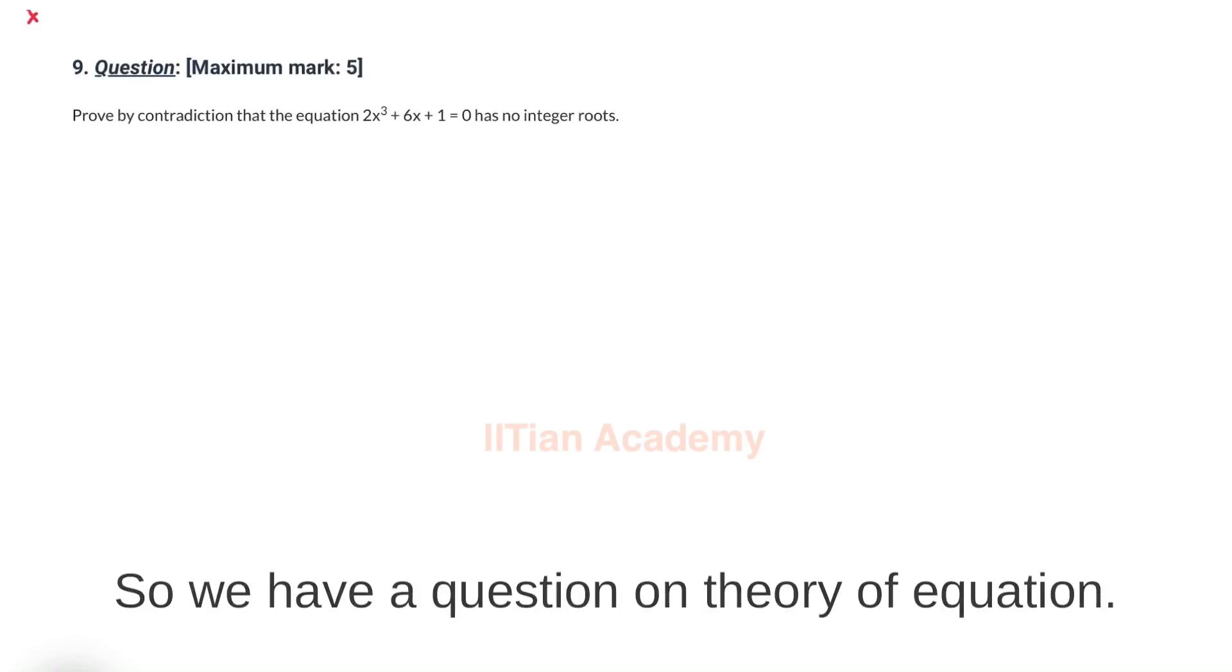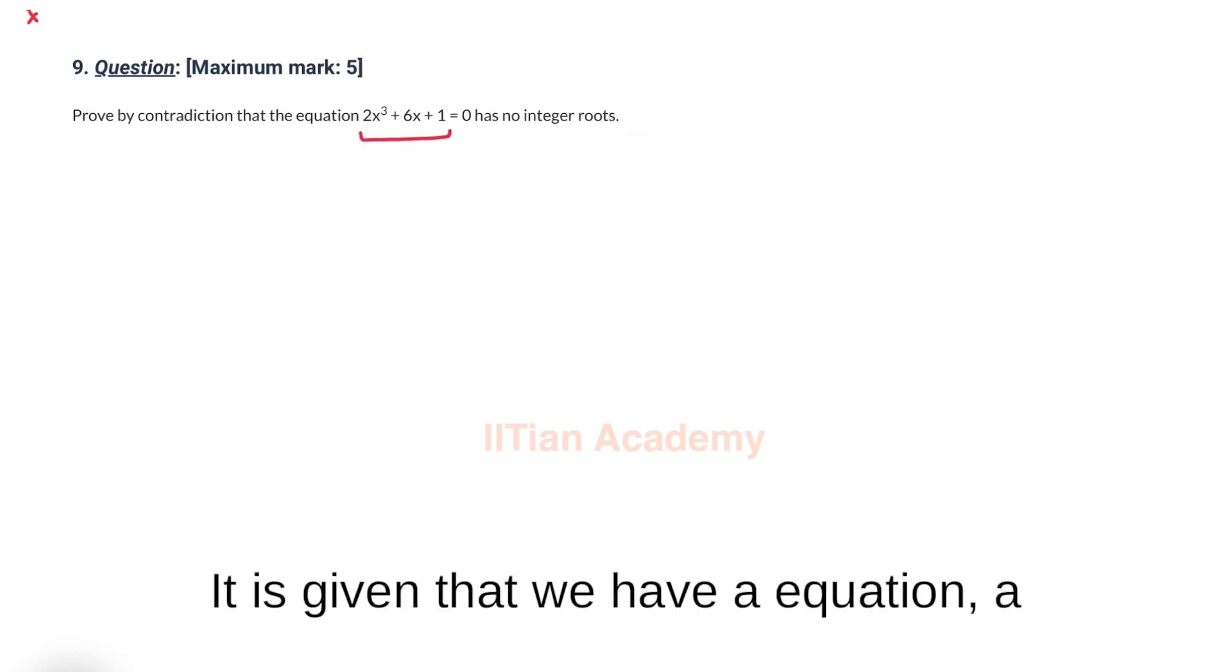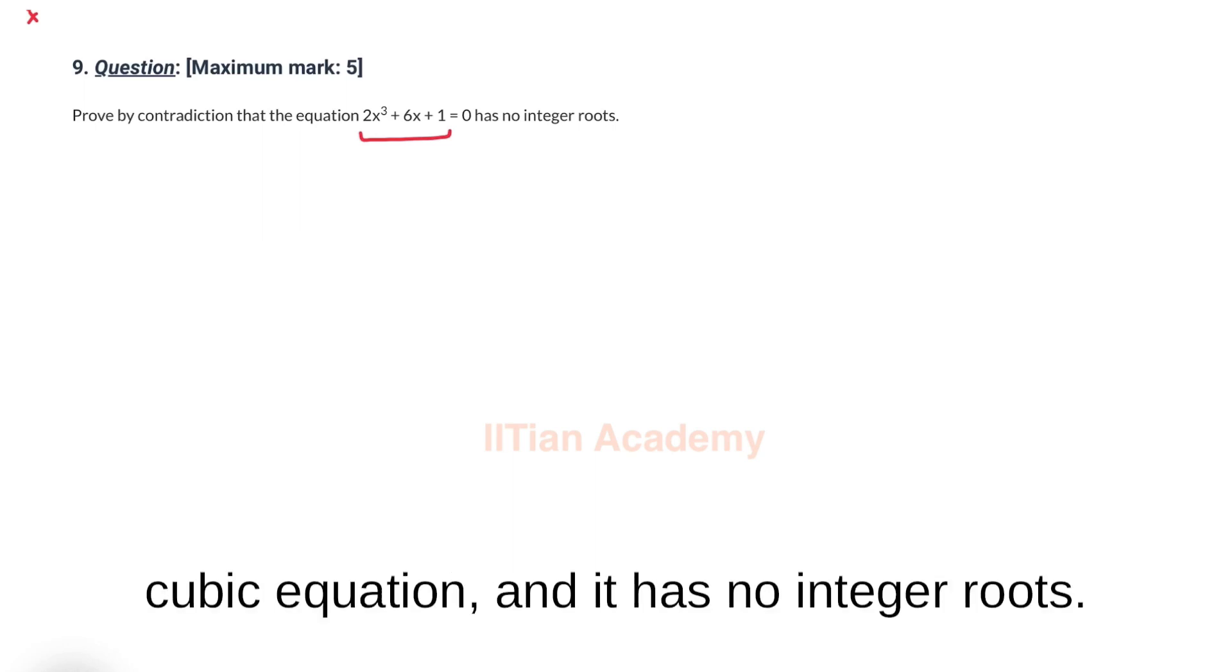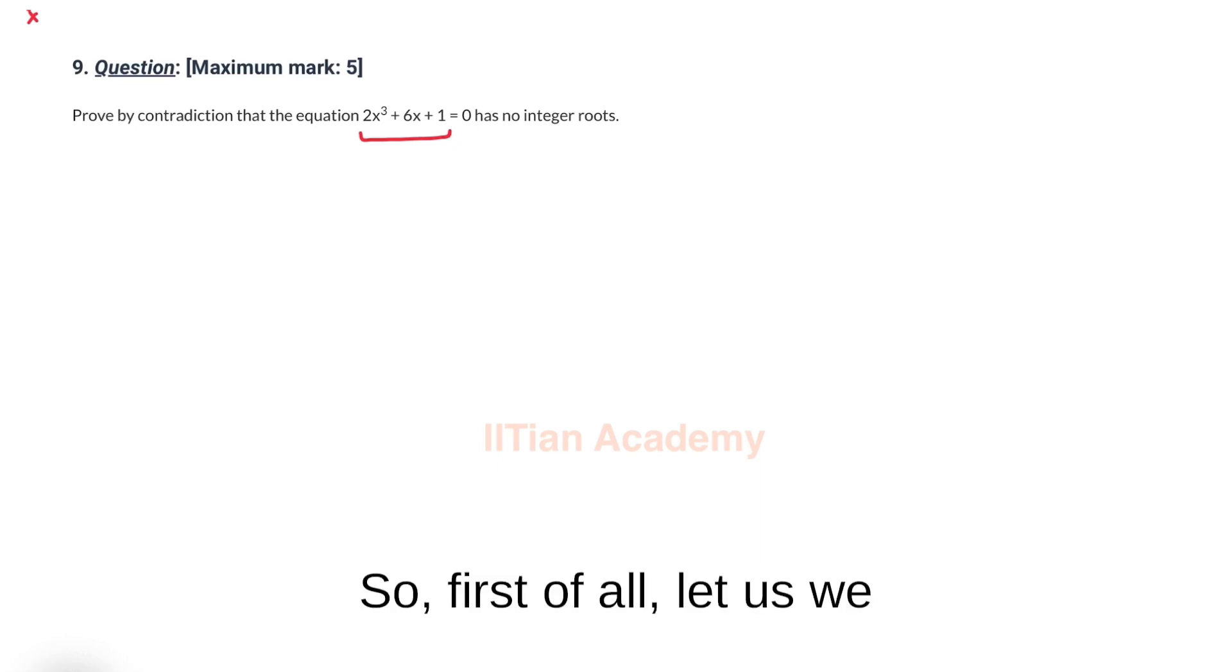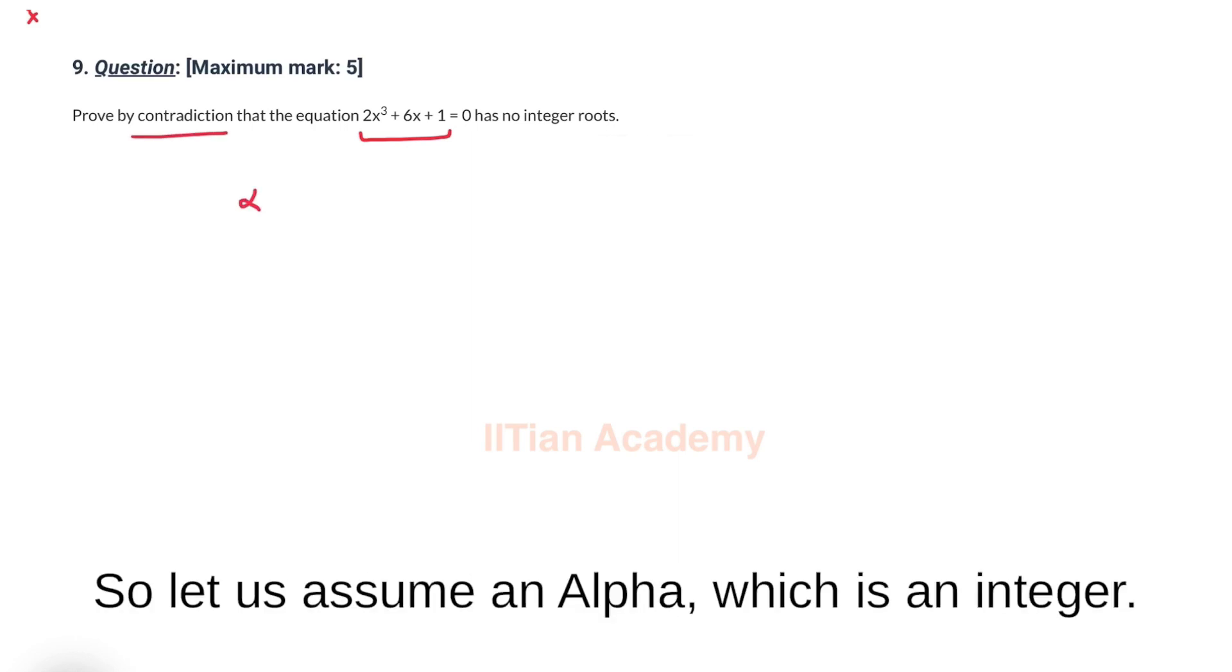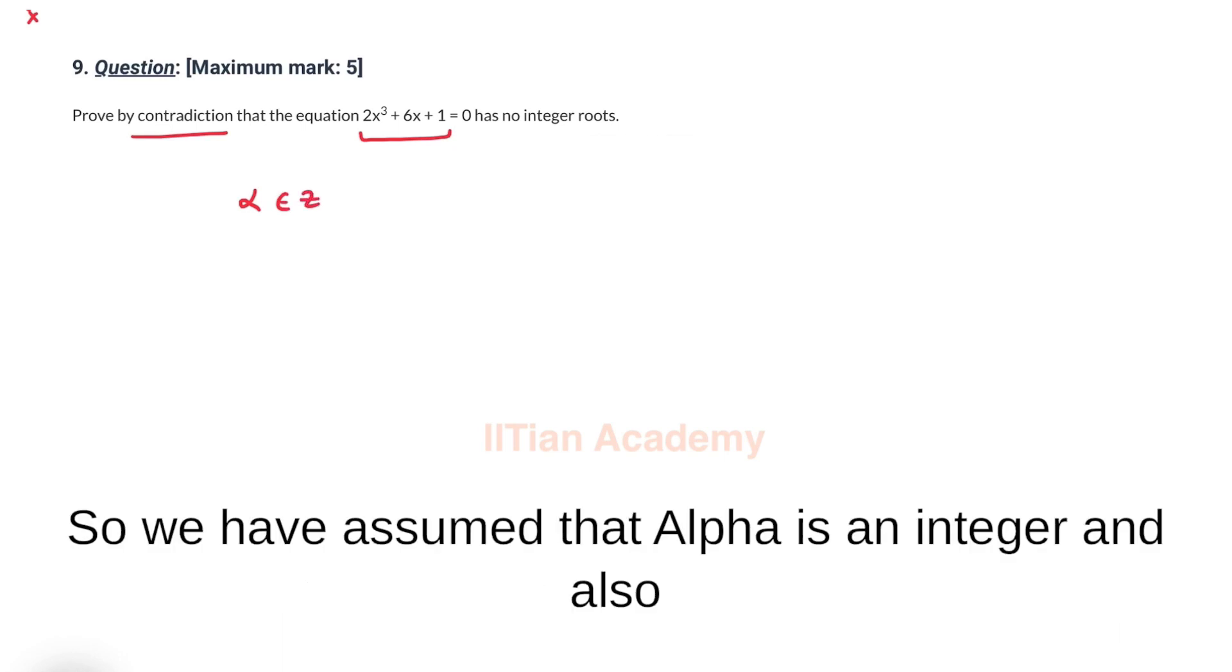Hello friends, so we have a question on theory of equations. It is given that we have a cubic equation and it has no integer roots. So first of all, we have to prove this by contradiction. So let us assume an alpha which is an integer.